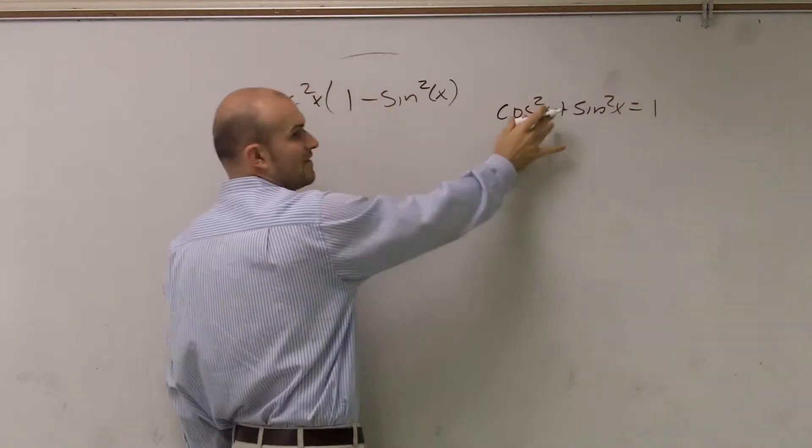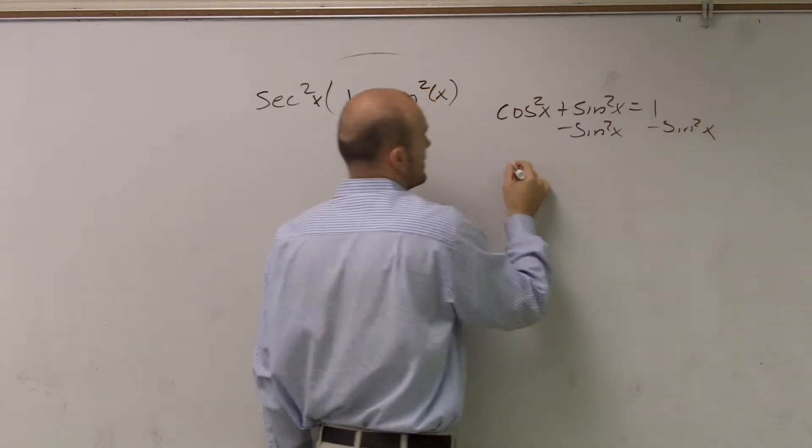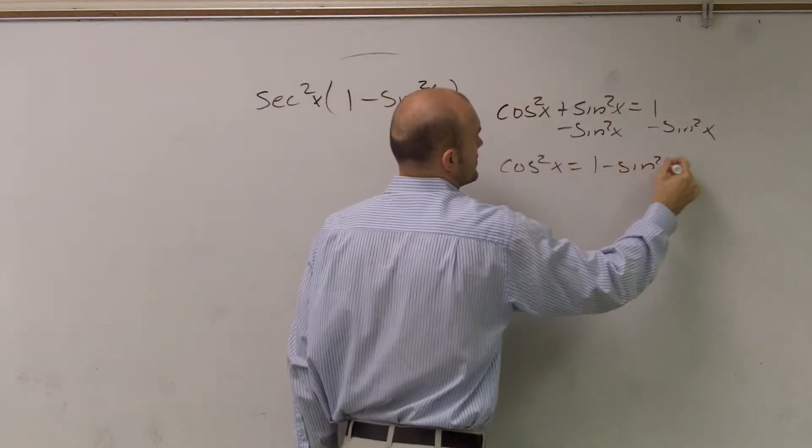Right. So to find sine squared, I'll subtract the sine squared of x. And therefore, I get cosine squared of x equals 1 minus sine squared of x.